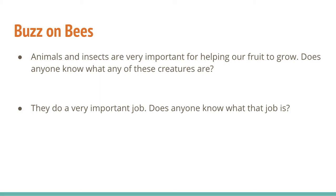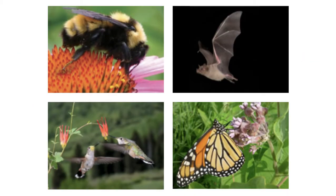There's one very important job that transitions our flower to a fruit. Do you have any idea what the name for that job is? If you guessed pollination, you're absolutely correct. Pollination is the act of when that pollen gets spread from one flower to the next, thus turning our flower into our fruit.